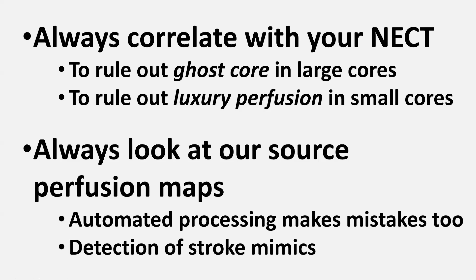Final messages: always correlate your perfusion findings with non-enhanced CT of the brain. Rule out a ghost core if you're dealing with a large ischemic core, and rule out luxury perfusion if you're dealing with a small core. Always also look at your source perfusion maps — do not just look at the reconstructed maps, because automated processing programs sometimes make mistakes. Keep eyeballing to make sure that what you see corresponds to what the software programs calculate.